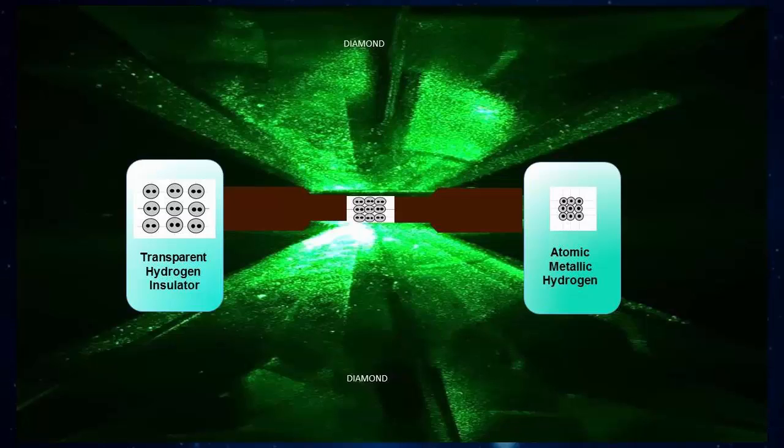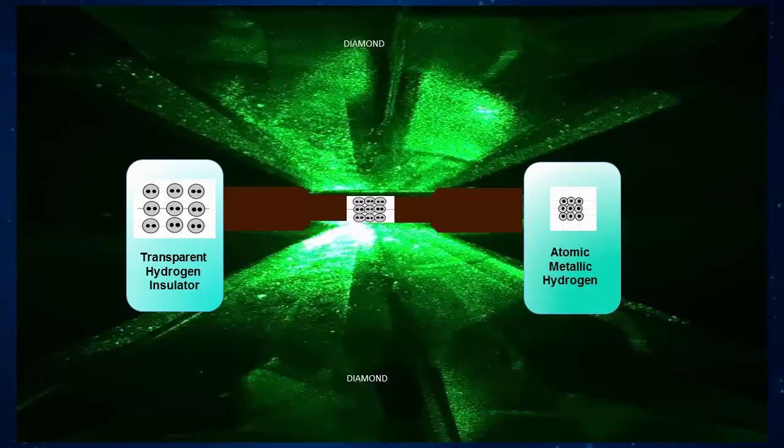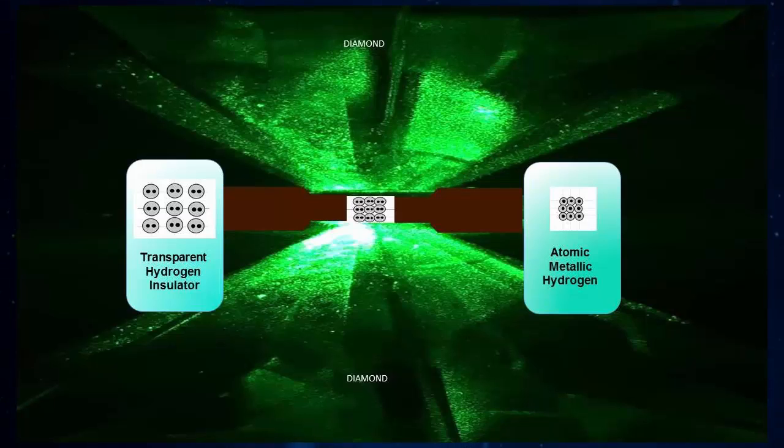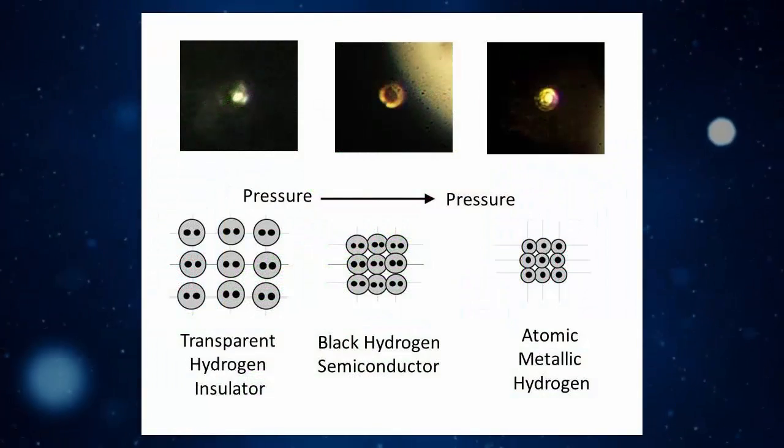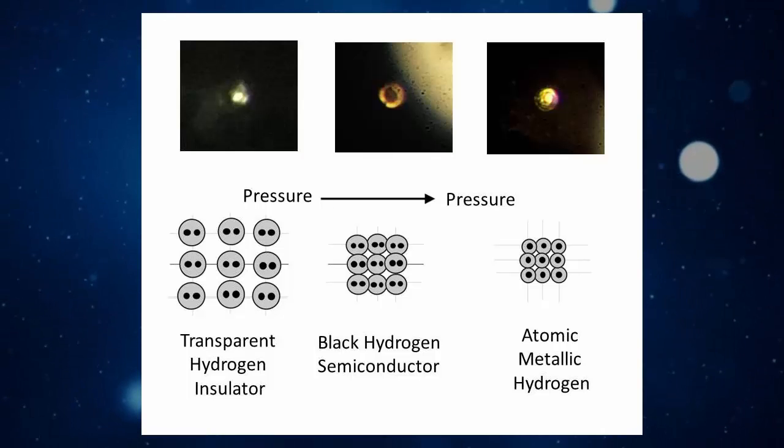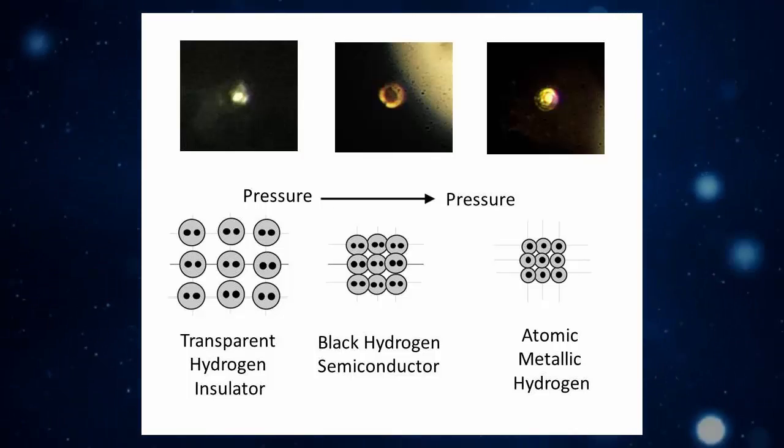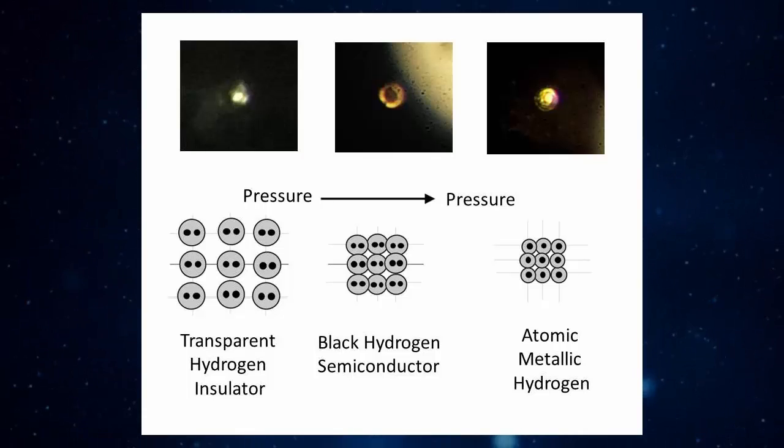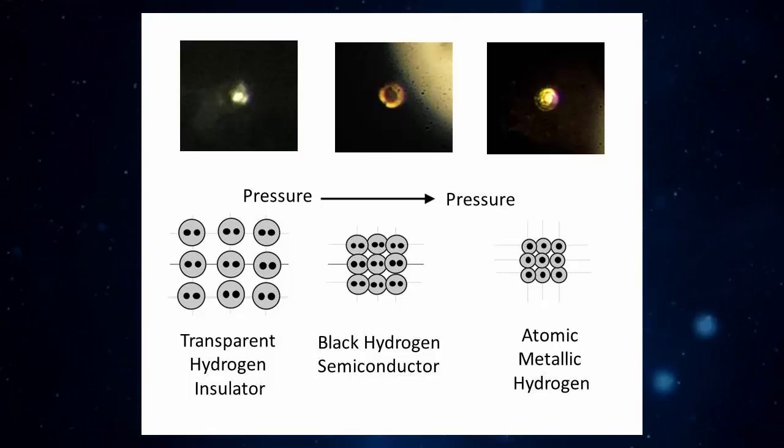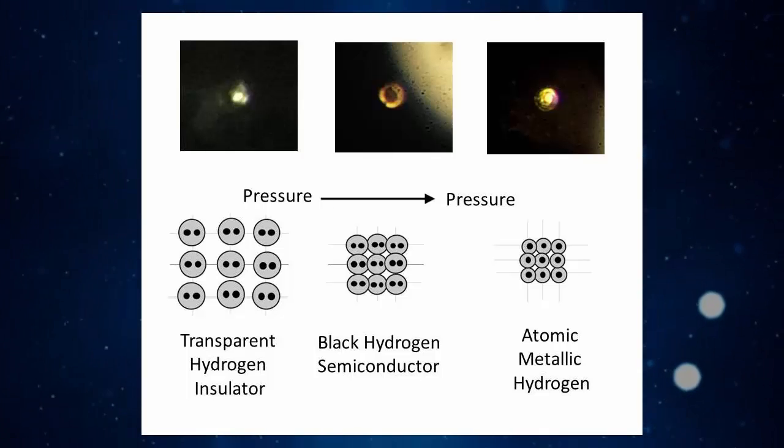And when we say high pressure, we mean high pressure. Back in 1935, it was predicted that metallic hydrogen would emerge at 25 gigapascals of pressure. But Silvera and his team finally achieved it at pressures between 465 and 495 GPA. Nearly 20 times higher than initially predicted. For perspective, 1 GPA equals 1 million kilopascals, and the average pressure at sea level on Earth is 101.325 kPa.